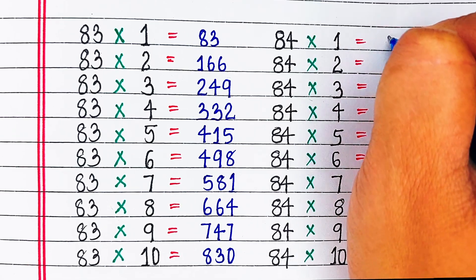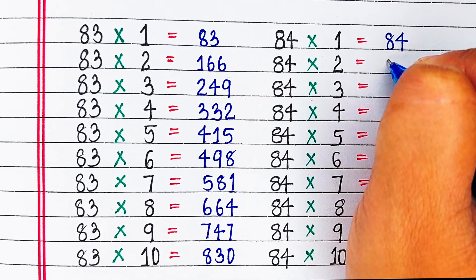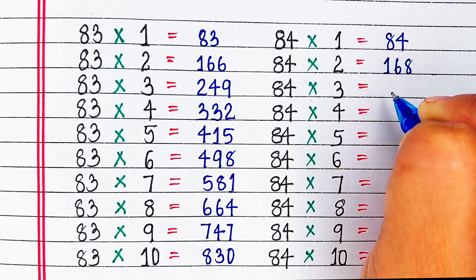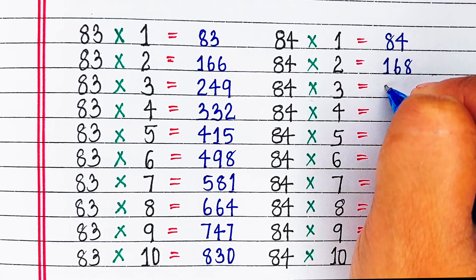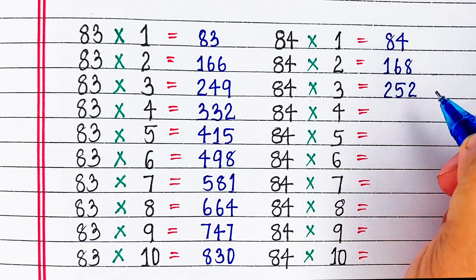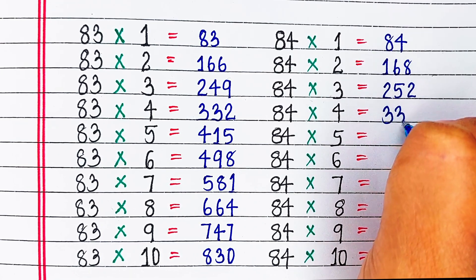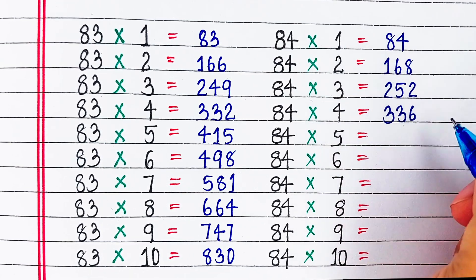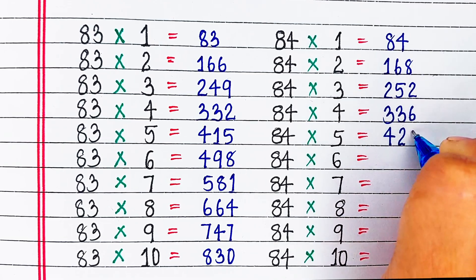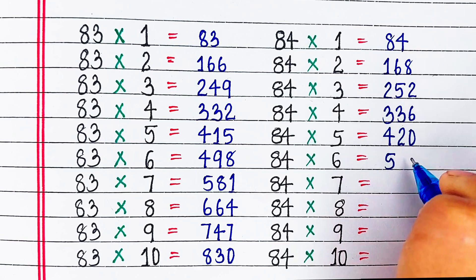Next is table of 84. 84 1s are 84, 84 2s are 168, 84 3s are 252, 84 4s are 336, 84 5s are 420.